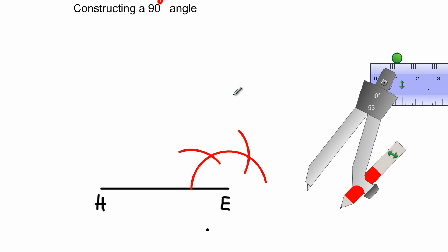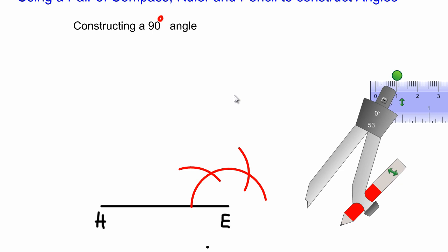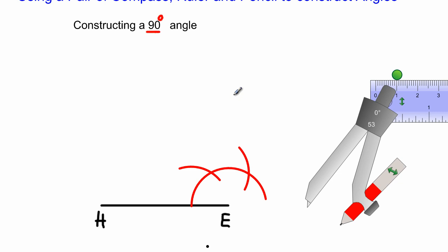Since I want to construct a 90 degree angle, and from the line segment HE to this point is 60, and from that point to this point is 60, then it simply means I want to cut this second 60 degrees into two equal parts. I'm going to cut this 60 degree at the top between these two arcs into two equal parts so that I would get a 30 degree.